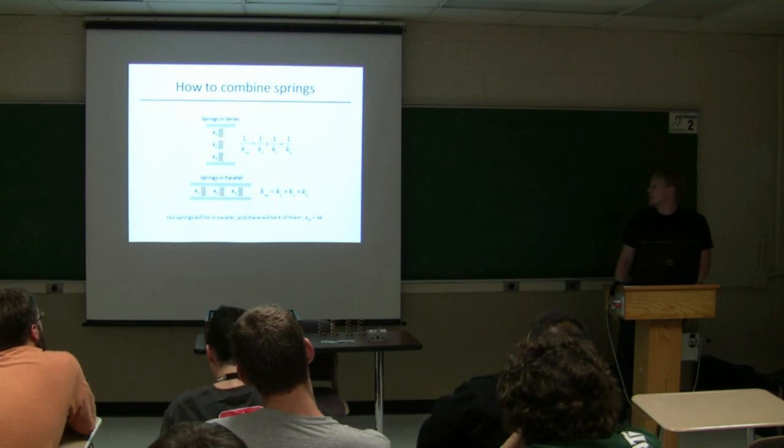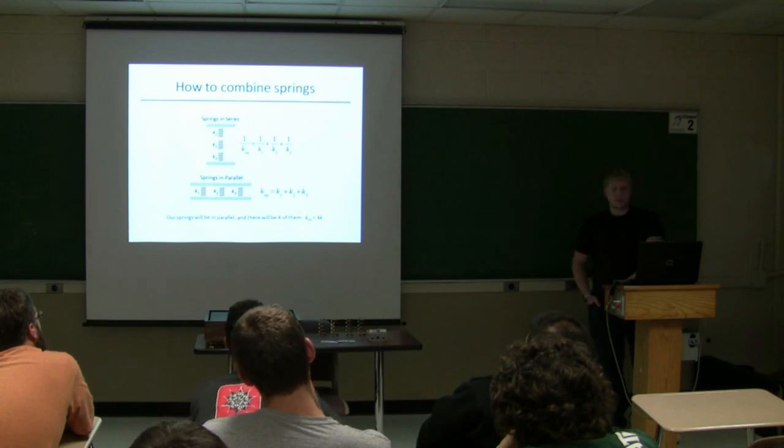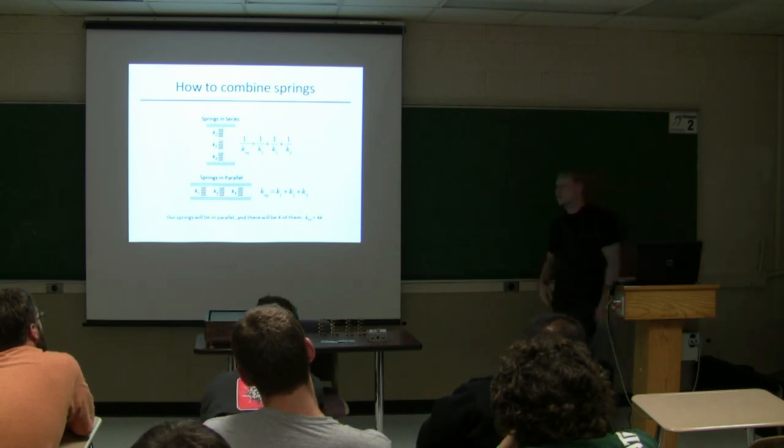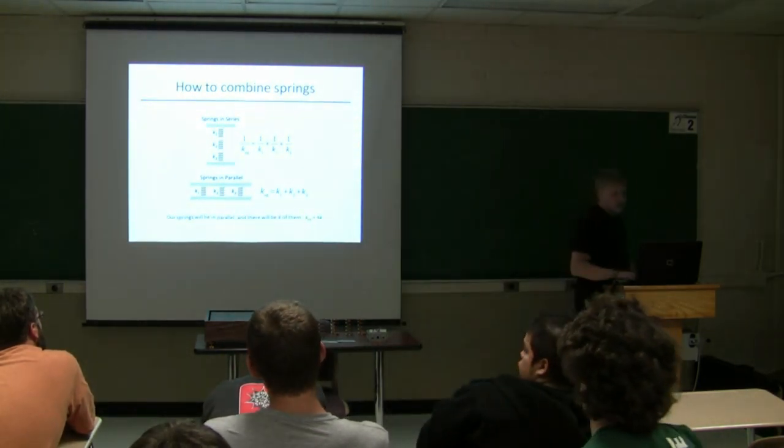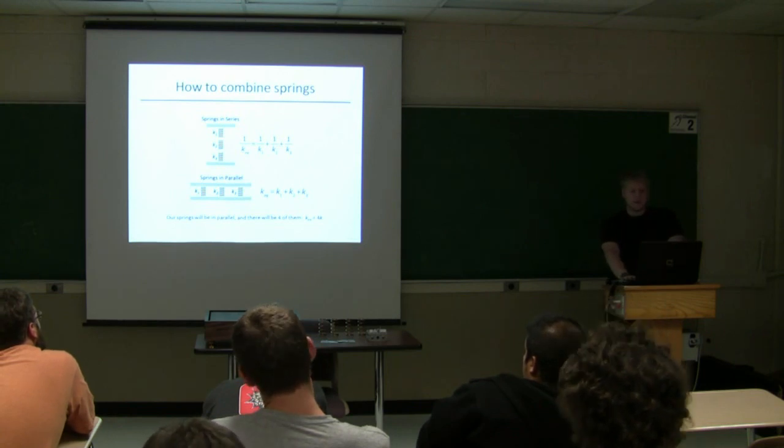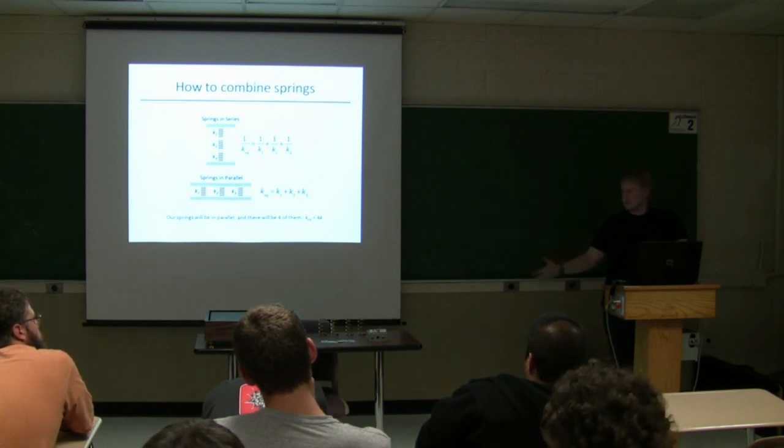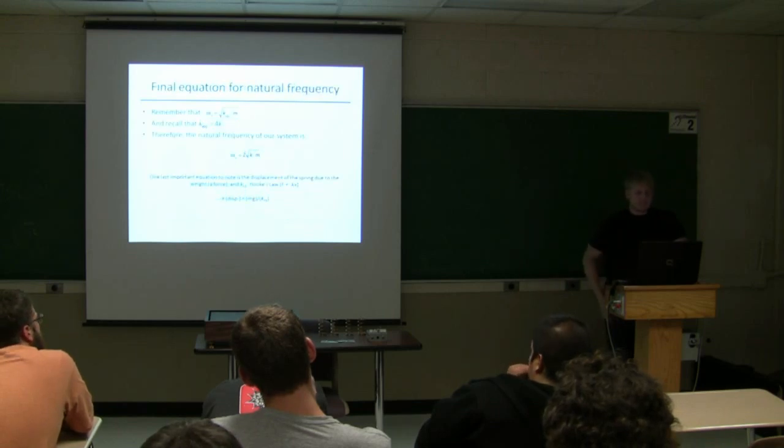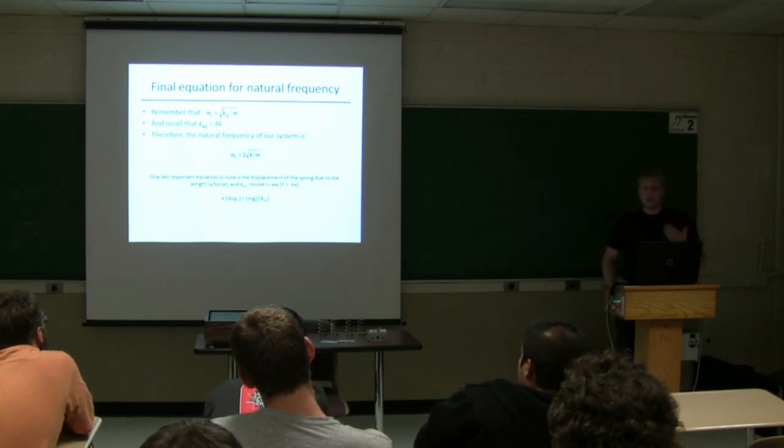So, here's just a reminder of how to combine springs. If you stack them on top of each other, it's 1 over the reciprocal equals the sum of the reciprocals. And in parallel, which is what we're doing, we have 4 springs under this table, and they're all going to be in parallel, like here. You just add the K value. So, in our table, K_eq is just 4K, because we're using 4 springs that are the same, so K is the same. K plus K plus K plus K is 4K. And if we remember that the natural frequency is the square root of K_eq over the mass, we put 4K in for K_eq, we get the natural frequency is 2 times the square root of K over the mass.